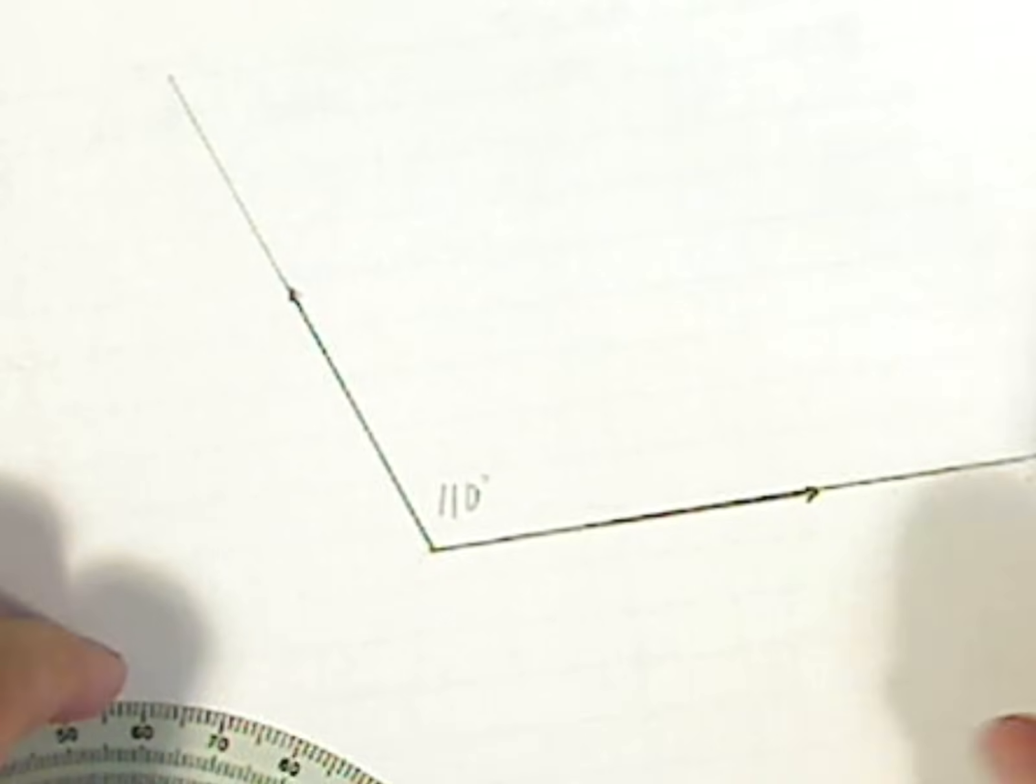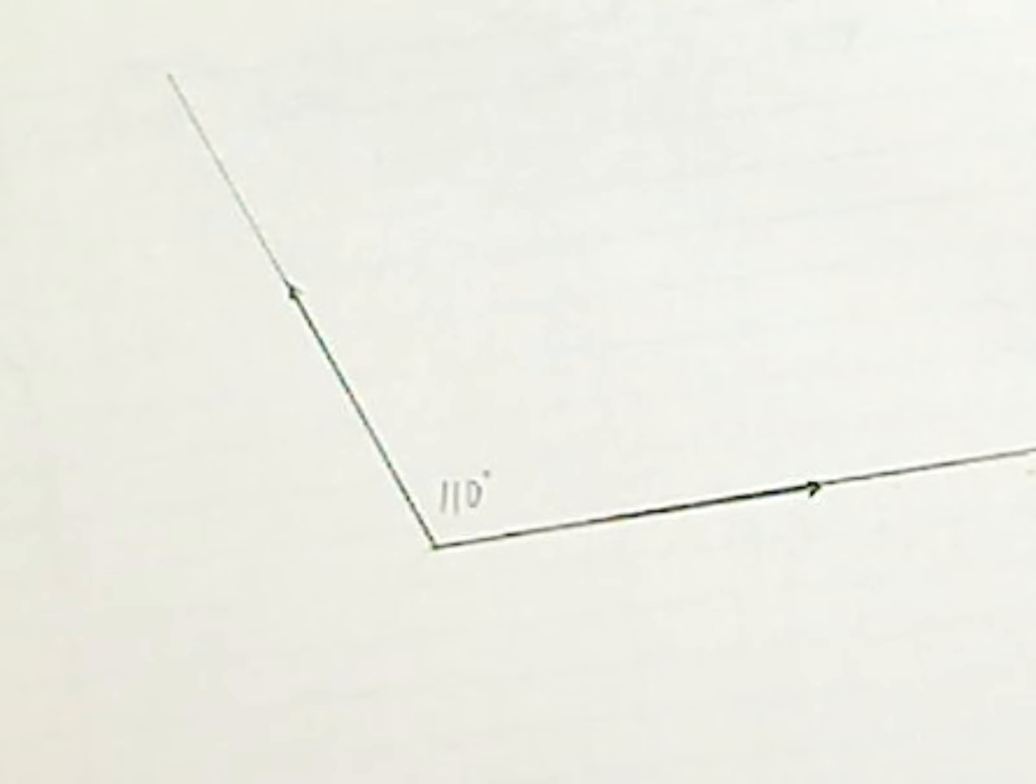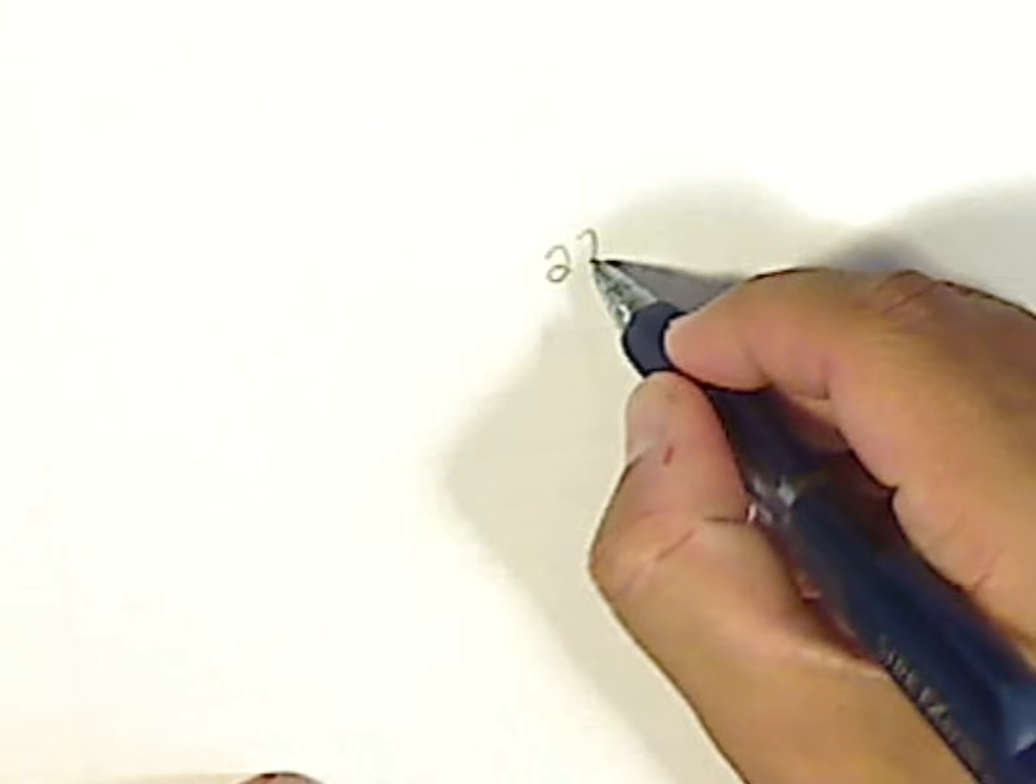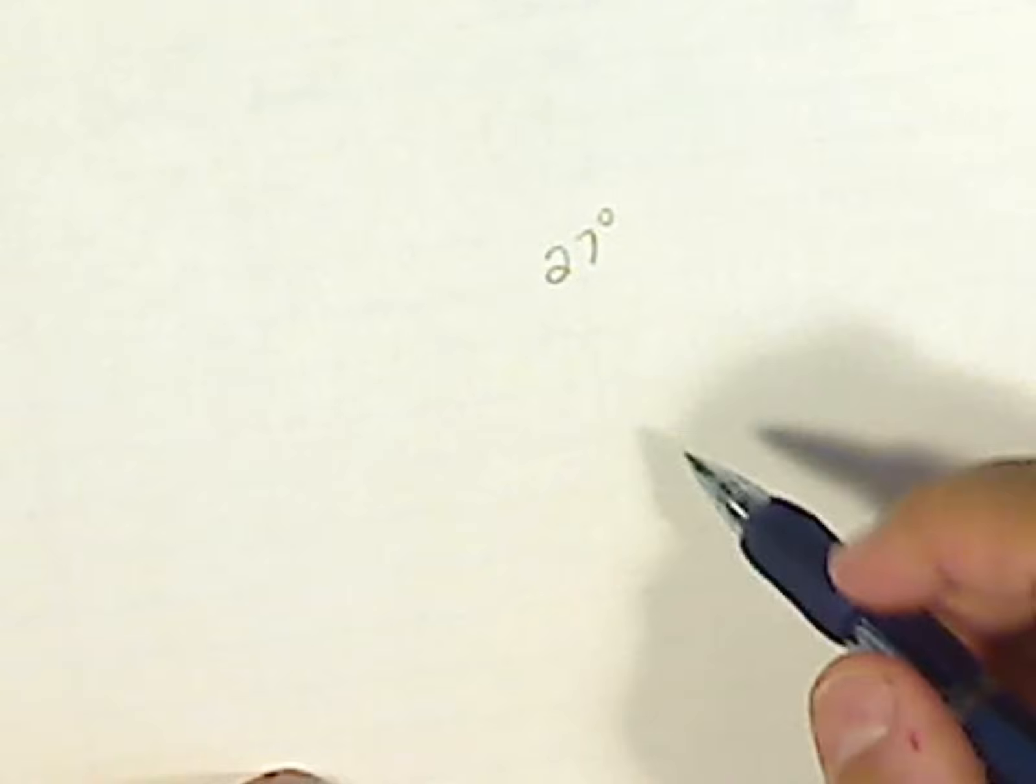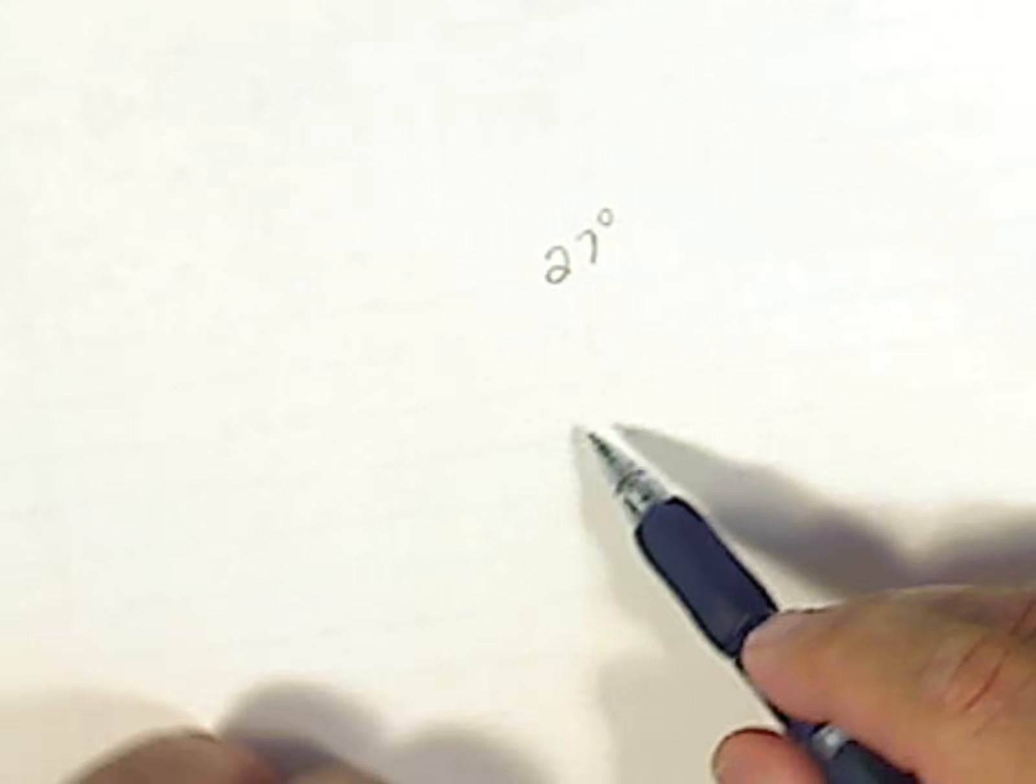Now, if I want to use my protractor to draw an angle, all I have to do is obviously start with a clean piece of paper and ask how big do you want this angle? Let's say someone wants it at 27 degrees. Well, angles are made of two rays joined at a single point called a vertex.